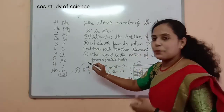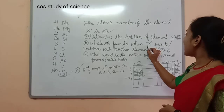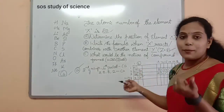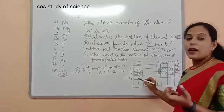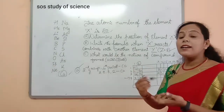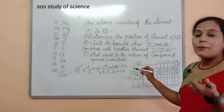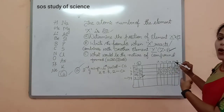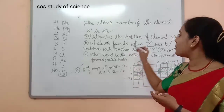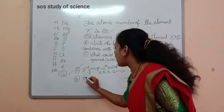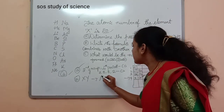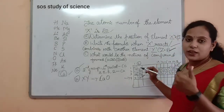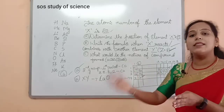The next question is: write the formula when X reacts or combines with another element Y whose atomic number is 8. Our element X has atomic number 20, which is calcium. Y has atomic number 8, so the 8th element is oxygen. When calcium combines with oxygen, it is Ca + O, which gives CaO — calcium oxide. This is the second question answer. Find out the element and combine it with the other element.